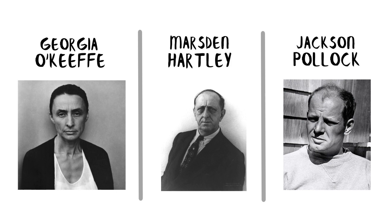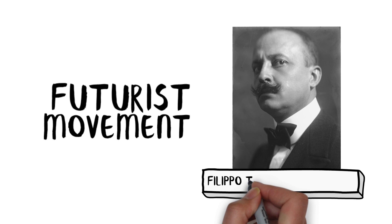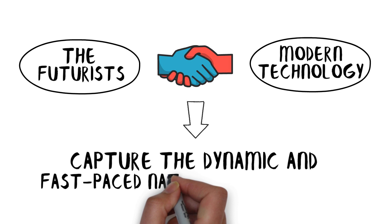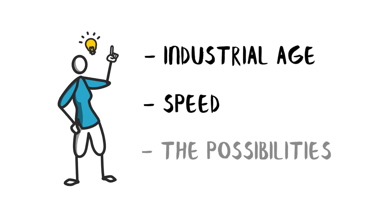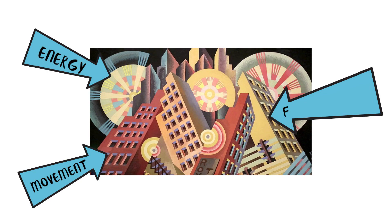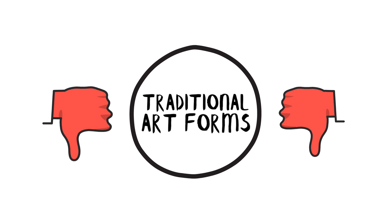The Futurist Movement, led by Filippo Tommaso Marinetti, emerged in Italy in the early 20th century. The Futurists embraced the advancements of modern technology and aimed to capture the dynamic and fast-paced nature of modern life. They were inspired by the industrial age, speed, and the possibilities of the future. Their works often depicted movement, energy, and fragmentation, using bold colors and abstract forms. The Futurists rejected traditional art forms and sought to break away from the past, advocating for a new aesthetic that celebrated the modern age.